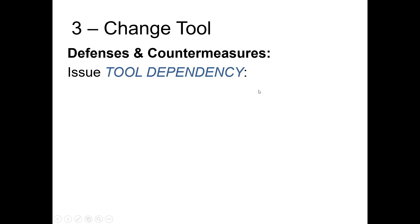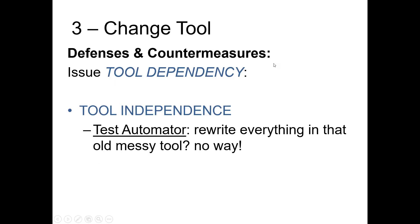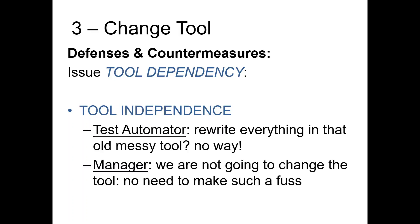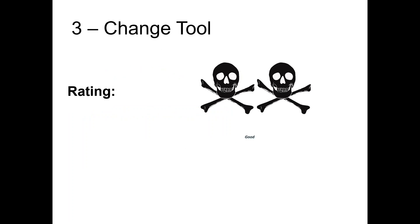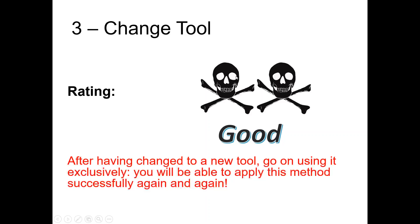There are defenses: the issue is 'tool dependency,' and the possible solution pattern is 'tool independence.' The test automator says, 'Write everything in that old messy tool? No way.' And the manager says, 'We're not going to change the tool — why do all this work? The tool is perfect.' This method isn't rated excellent because for a time you can still use the old tool, so it doesn't kill things off as fast as when Atlas leaves. But when you change to a new tool, you work on it exactly as before using only the tool's functionality — then you can apply this method again and again.